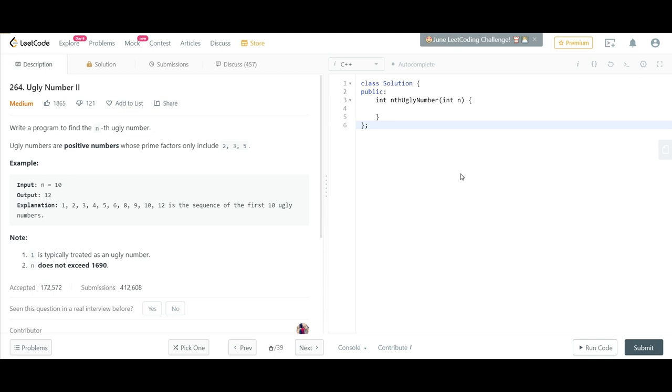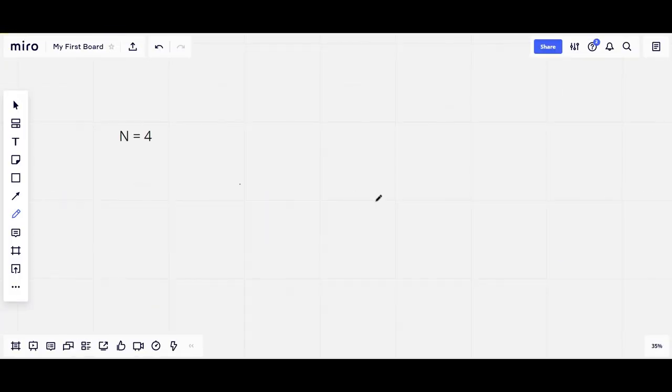They have given in the explanation the first 10 ugly numbers, and the 10th ugly number is 12, so they return 12. Also note, 1 is treated as an ugly number and the value of n doesn't exceed 1690. So let's discuss this with a smaller value of n. The value of n I have taken here is 4.